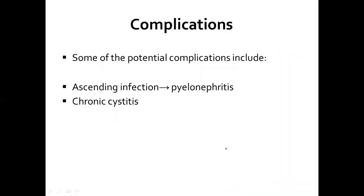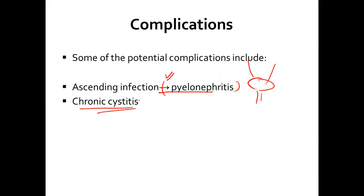Complications we might have include ascending infection progressing to pyelonephritis — those are the things we were trying to avoid. If the infection continues going upwards, we might have pyelonephritis. We might also have chronic cystitis, which occurs when we keep having reoccurrences of bladder infection, which again can become a significant problem.